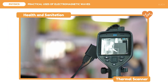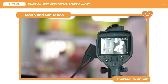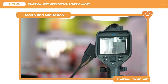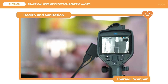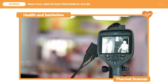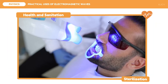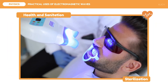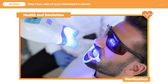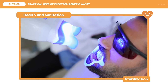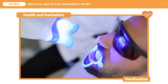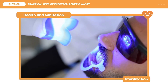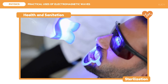Lower EM waves can also be used in detection of simpler illnesses like fever, since heat is detected by thermal scanners using infrared rays. Ultraviolet rays are used for cleaning such as teeth whitening, and may also be used in sterilizing rooms and food, because UV rays destroy the cells of microorganisms so that they stop reproducing.